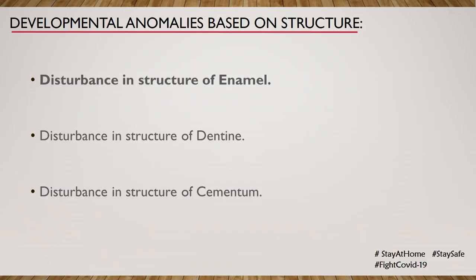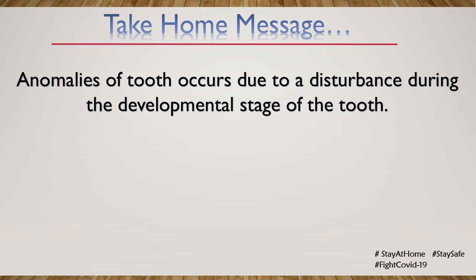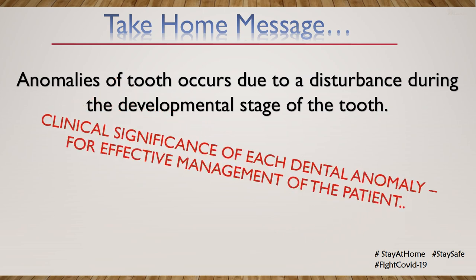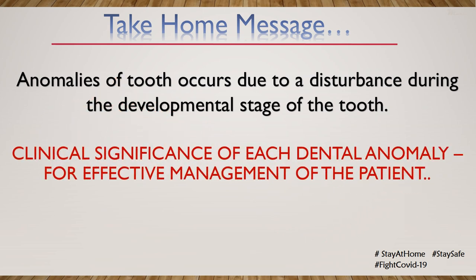Following taurodontism, we have other developmental anomalies affecting the structure of the tooth, which may be encountered in relation to the enamel, dentin or cementum. These developmental anomalies will be the topic for our next class. To conclude, anomalies of the tooth occur due to disturbances during the developmental stage. It is important to know the clinical significance of each dental anomaly so as to have an effective management of the patient.